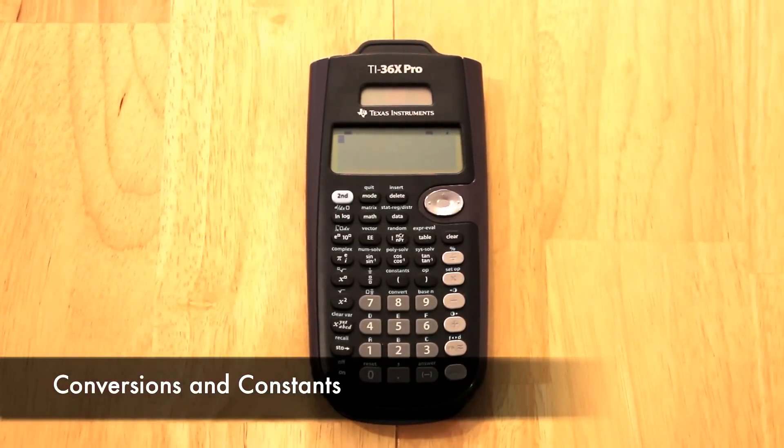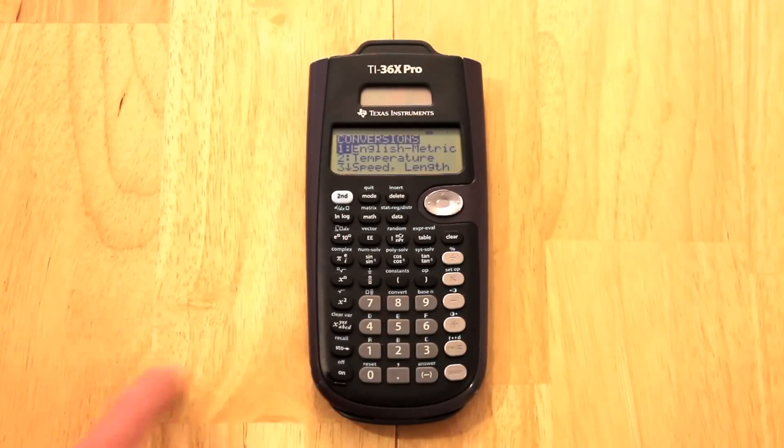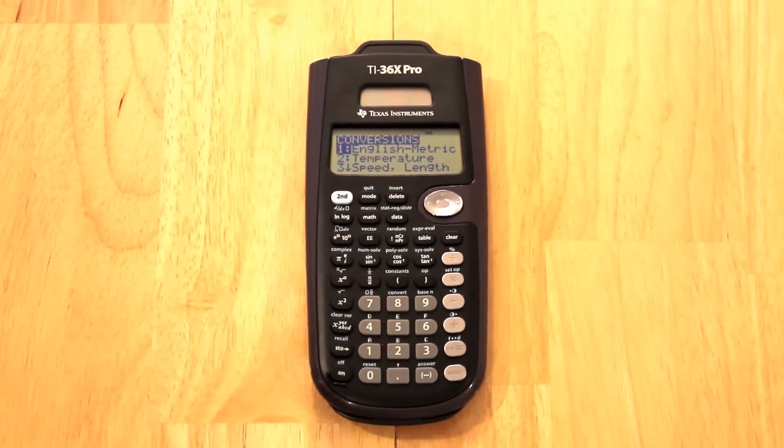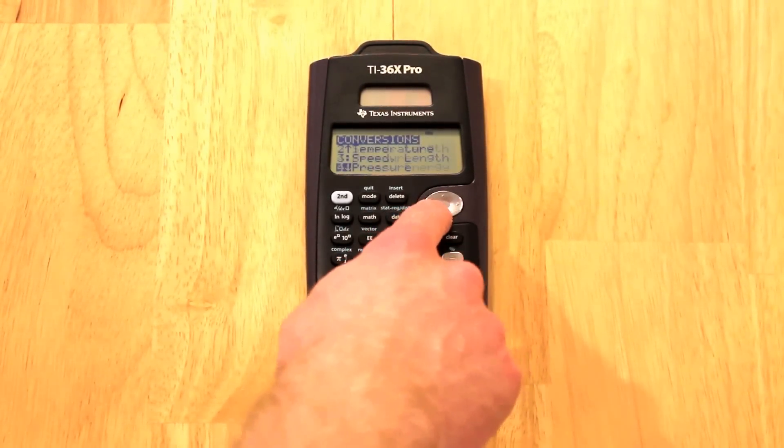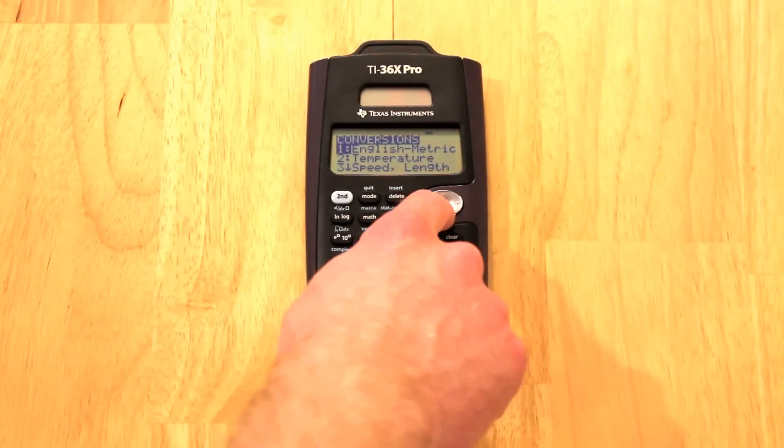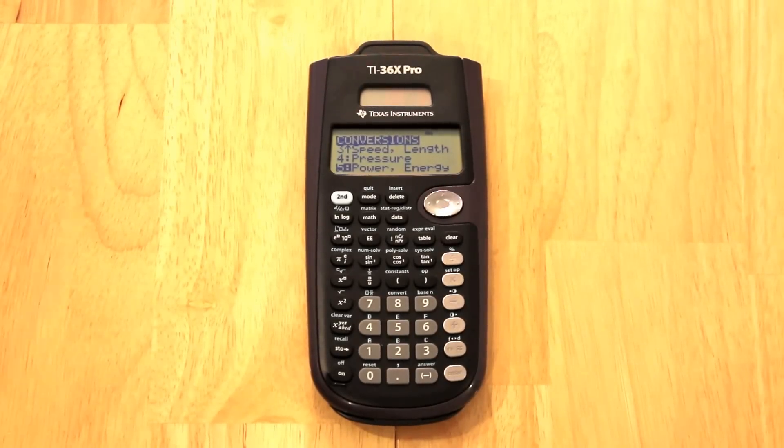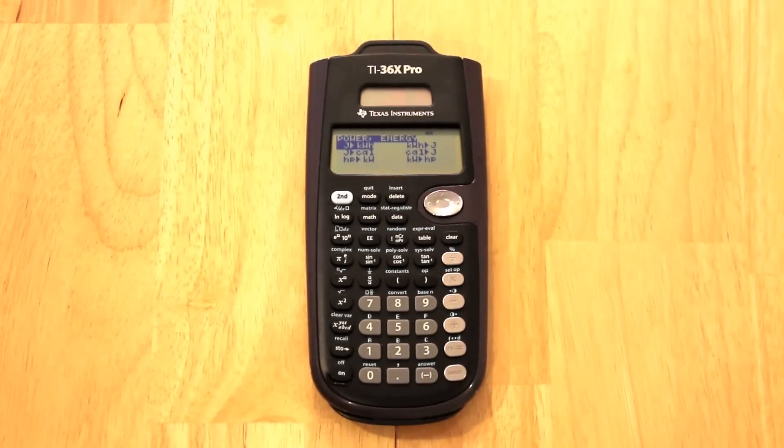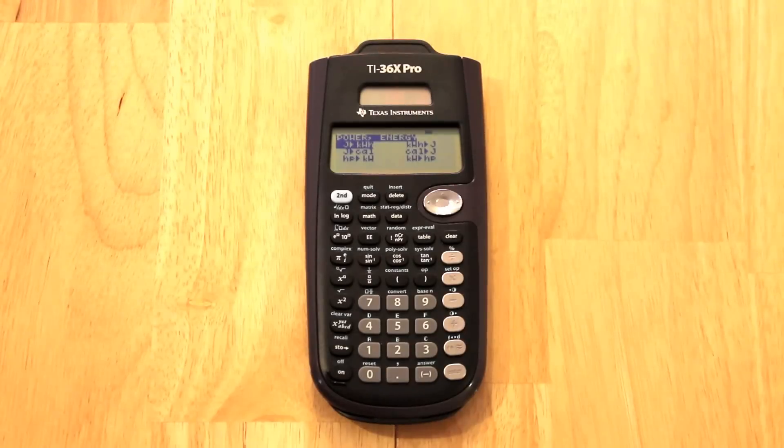This calculator has some conversion factors and some units stored. So we'll hit second and number 8 for convert. It has conversion factors for English to metric units, temperature, speed and length, pressure, power and energy, and that's all the only categories. So for example, I want to look at power and energy. We have options to convert from joules to kWh, from joules to calories, from horsepower to kW, from kWh to joules, from calories to joules, and from kW to horsepower. For those of you who don't know, kWh is kilowatt hours and kW is just kilowatt.